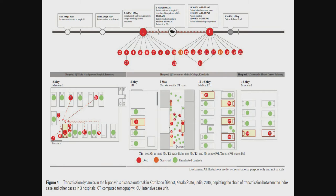The timeline shows the index case, his brother, father, and aunt. The index case was hospitalized in a community health center (CHC) on the first bed near the entrance. This was another reason so many people were exposed — the entrance was crossed by all people going in and out of that ward. The next bed, opposite bed, and companions are all mapped on this timeline.